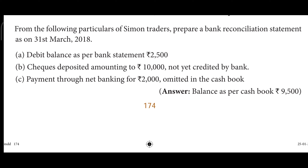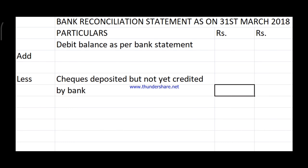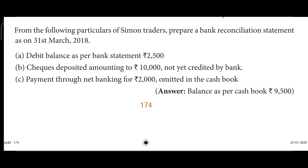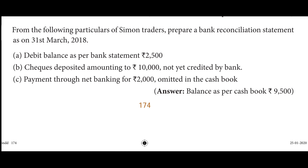The next transaction given is: cheque deposited amounted to 10,000, not yet credited by the bank. The cheque is deposited into the bank but the bank has not credited it so far — meaning the bank has not recognized it, so there is no 10,000 written in your passbook as a deposit. Therefore, we are going to put this in the less category, because the passbook balance is less.